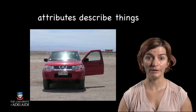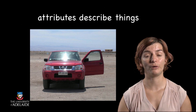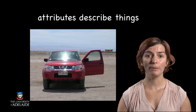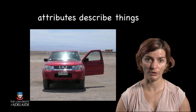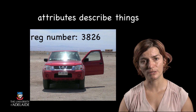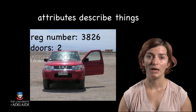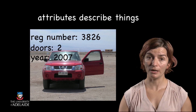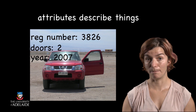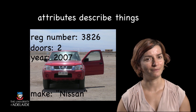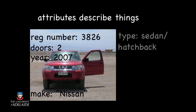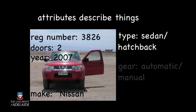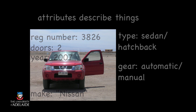let's think of the categories of data describing a car on a registration paper. We might have categories that store numbers, such as the registration number, the number of doors, and the year it was made. It will also include words that describe the car, such as the make and model, as well as its color. It might also contain data that has one or two different options, such as whether it is a sedan or a hatchback, or if it is an automatic or a manual car.